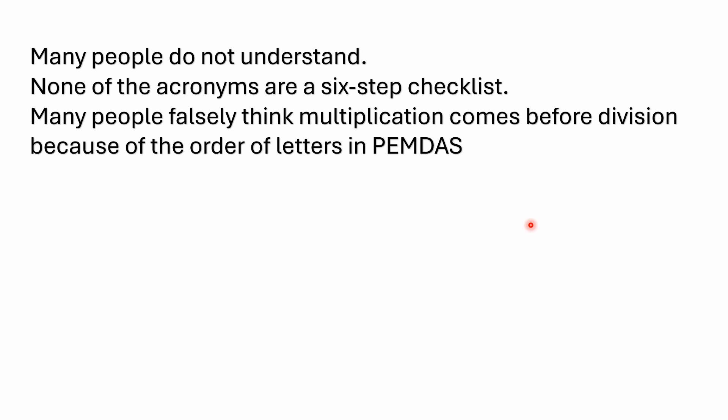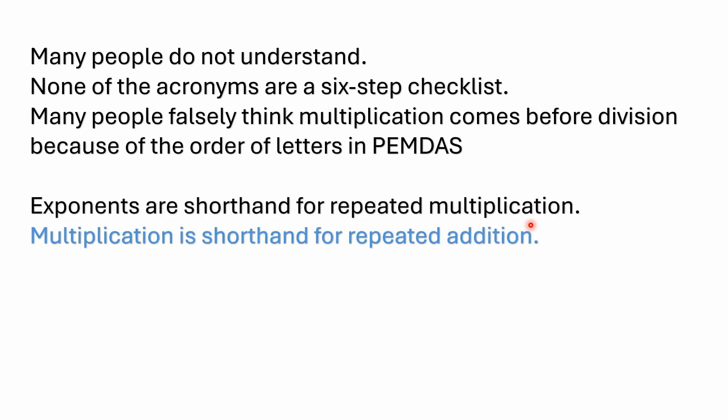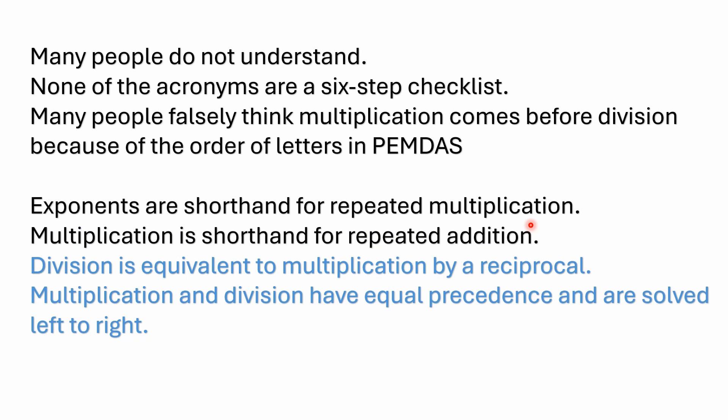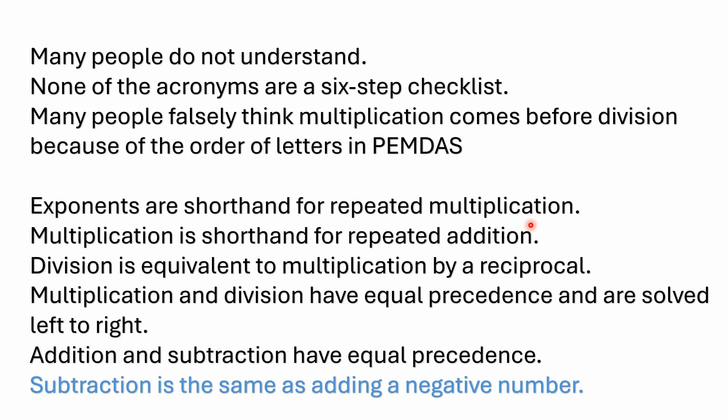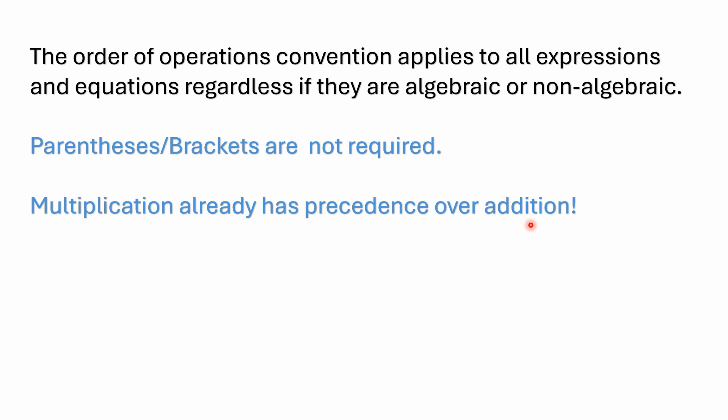Now, a lot of people that did learn the acronyms, unfortunately, they memorized the order of six letters, but they falsely think multiplication comes before division just because of the order of the letters in PEMDAS. You need to remember that exponents are just shorthand for repeated multiplication. Multiplication is shorthand for repeated addition. And then division is just equivalent to multiplying by a reciprocal. Multiplication and division, again, have equal precedence and they're solved left to right. And addition and subtraction also have equal precedence. Subtracting, again, is the same as adding a negative number.